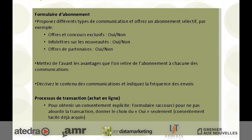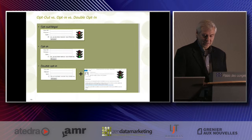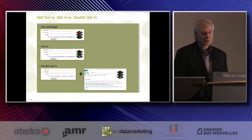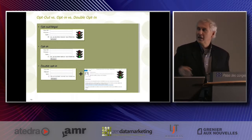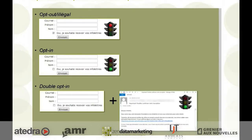Processus de transaction : à champ en ligne pour obtenir un consentement explicite, faire un formulaire accourci pour ne pas alourdir la transaction, donner le choix du oui seulement — consentement tacite déjà acquis. Si vous voulez capturer des informations de base, c'est sûr que plus tard on pourra inciter les gens à compléter leur profil. Donc : l'adresse courriel, le prénom, le nom. Et dans le premier exemple, sur une lumière rouge — à ne pas faire — c'est le opt-out : c'est plus permis, c'est illégal. On a roulé longtemps là-dessus mais c'est fini.